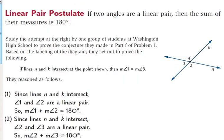First of all, we need to establish the linear pair postulate — you need to know that term. If we read the definition, it says: if two angles are a linear pair, then the sum of their measures is 180 degrees. You know that, but you're going to have to use that phrasing in our proofs.